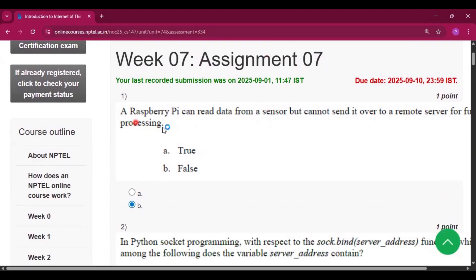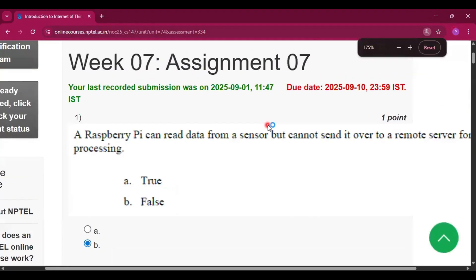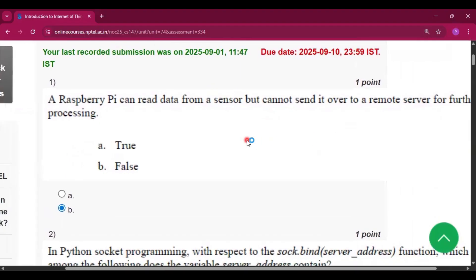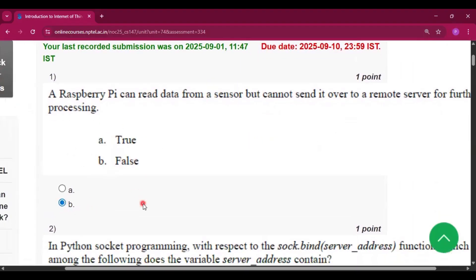Now the first question is: a Raspberry Pi can read data from a sensor but cannot send it over to a remote server for further processing. So the answer will be option B, that is false.